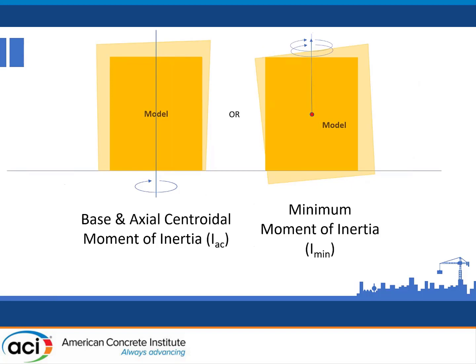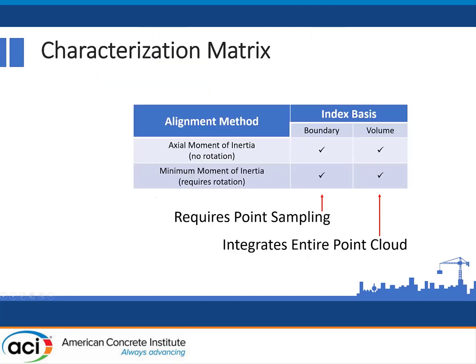We have two techniques we're working on. One would be to align the base — keeping it parallel, collinear, or coplanar — and then align the axial centroidal moment of inertia. The second way would be to align the minimum moment of inertia, which would require either a rotation of the model object or rotation of the printed object. In addition to alignment, we've looked at calculation of a surface-based index — a fidelity of printability — or alternatively a volume-based method. Surface-based methods require some sort of point sampling, while volume-based methods require integration over the entire point clouds.